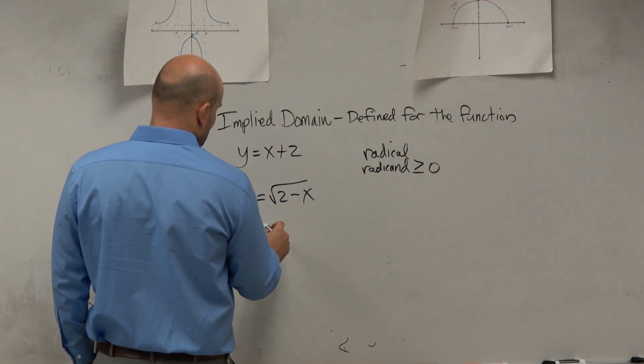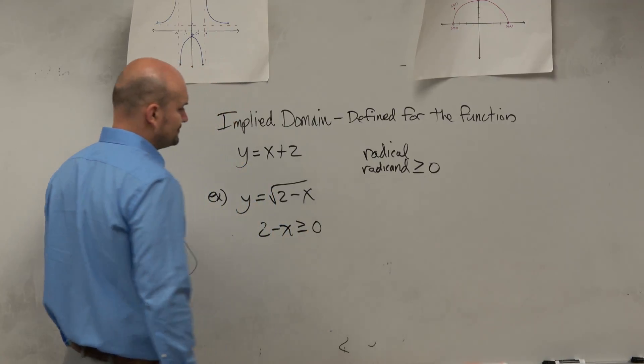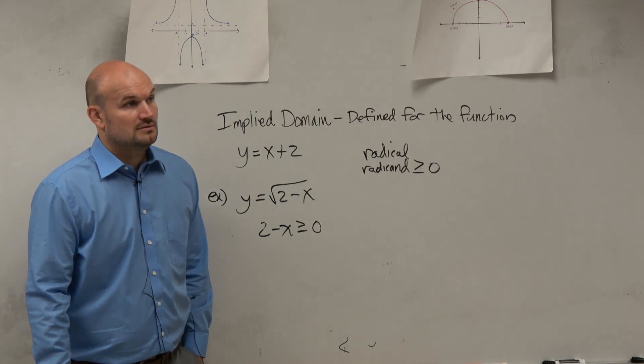So in this case, I will set 2 minus x greater than or equal to 0. That's really it.